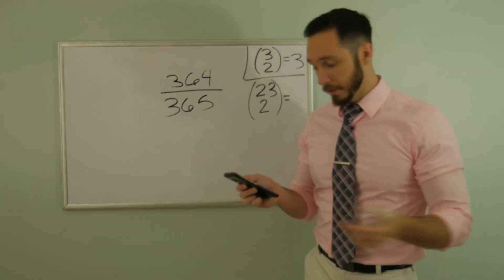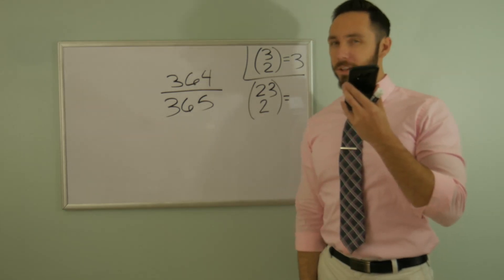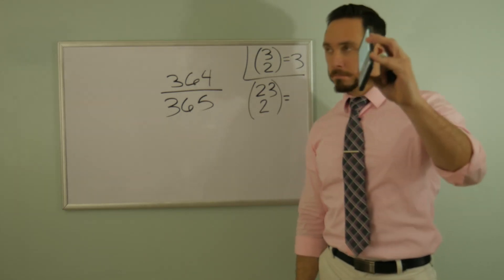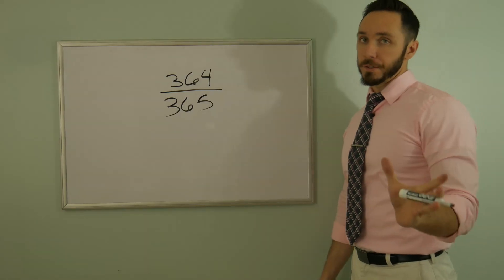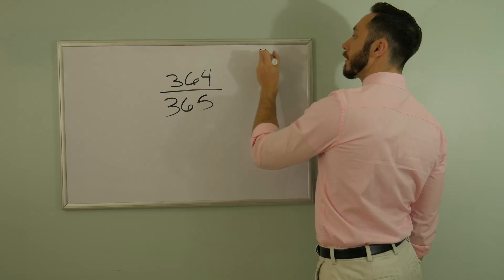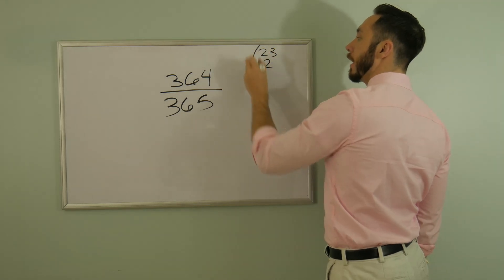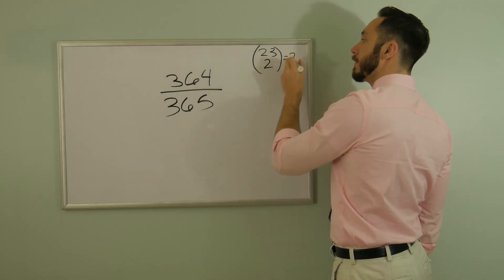Now we just refer to the calculator. All right, Google, what is 23 choose two? 23 choose two is 253. Okay, we just heard it. So 23 choose two is simply 253.